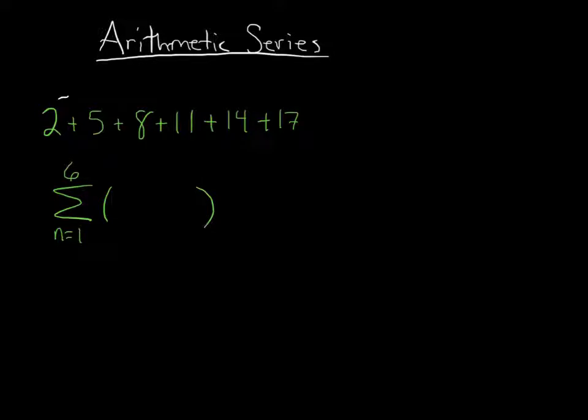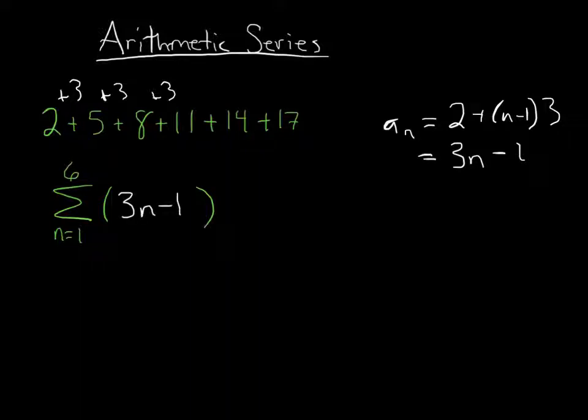And if you notice, all I'm doing is adding 3 to get each next term. So I have a sub n is equal to the initial term 2 plus n minus 1 times 3. And if I simplify that, I'll get 3n minus 1. And that is my explicit formula. And so there we have it. I have just written this arithmetic series in summation notation.